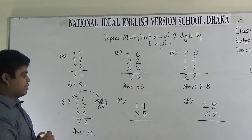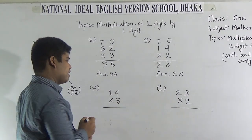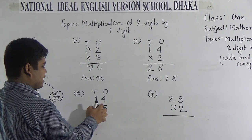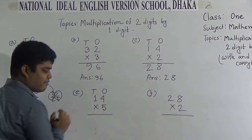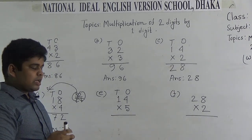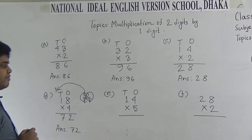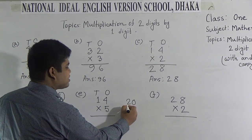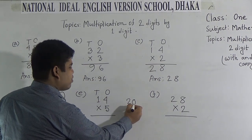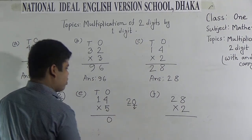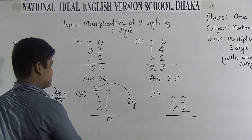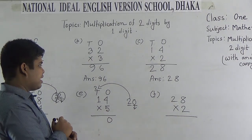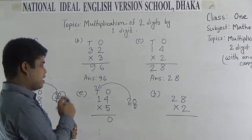Next one: 14 × 5. Here, 4 is in the 1's place and 1 is in the 10's place. So, we multiply 4 by 5 first, then we multiply 1 by 5. We count the times table of 5: 5 1's are 5, 5 2's are 10, 5 3's are 15, and 5 4's are 20. 20 has 2 places: 1's place and 10's place. So, the 1's place digit 0 is placed in the 1's place, and 2 is carried to the 10's place. Again we count the times table of 5 to multiply 1 by 5: 5 1's are 5. And carrying 2 is added with this 5.